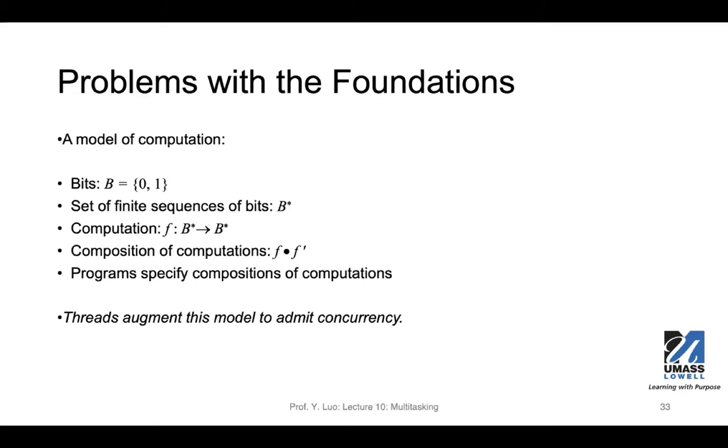The model of computation is like this: we're dealing with data, so we can abstract them with zeros and ones. We have a set of finite sequences of bits, and we do computation. We apply this function F—F takes this set B as an input, and the output is another set based on B. We have compositional functions—we can apply multiple functions. You can do all kinds of operations, signal processing, to change zeros and ones. The programs that we design specify the composition of these computations.